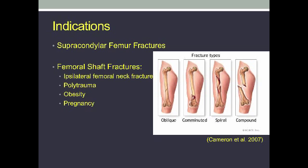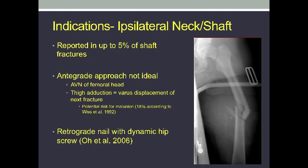Indications for retrograde nailing include supracondylar fractures, but also femoral shaft fractures, which will be the main purpose of my talk. The combination of ipsilateral femoral neck and shaft fractures is especially problematic. Antegrade nails are usually not indicated for these injuries because the adduction required to enter the piriformis fossa puts direct stress on the femoral neck fracture, which may lead to malunion of the neck fracture.